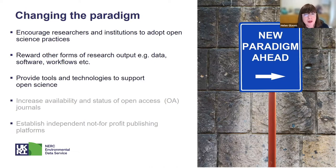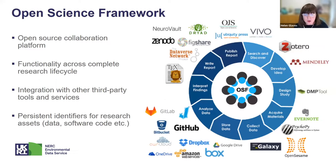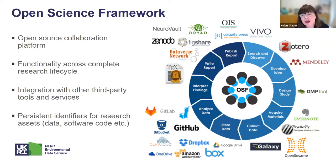This requires encouraging researchers and institutions to adopt open science practices, but we also need to make sure we're providing the tools and technologies needed to support open science. A good example is the Open Science Framework, which is being widely used throughout the scientific research community. It is just one example of a collaborative tool that can be used by researchers across the world to share their work, particularly useful while we're unable to travel to work with colleagues.